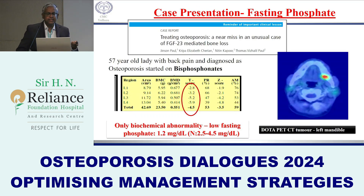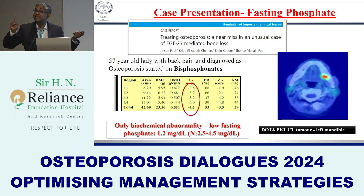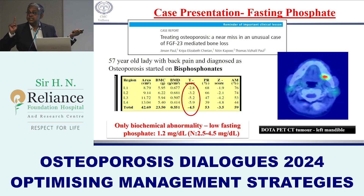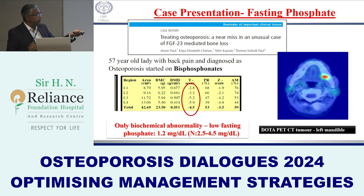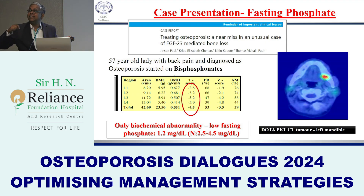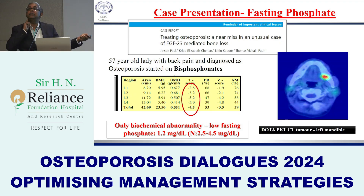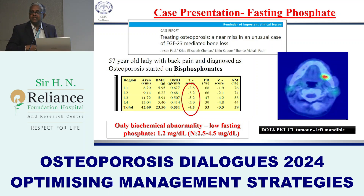Case 3: A lady diagnosed with osteoporosis based on a back pain scan. Fasting phosphate was not measured and she was given bisphosphonate — but it was actually osteomalacia secondary to a phosphaturic tumor. On DOTATATE scan, a tumor was identified in the mandible secreting FGF23, causing urinary phosphate loss. Once the tumor was removed, the patient recovered. This highlights the critical importance of measuring fasting serum phosphate.